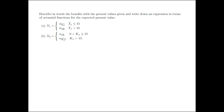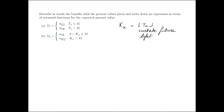Looking at part B, we deal with the random variable kx. kx is the curtate future lifetime — the floor function applied to tx — so it is the curtate future lifetime of an x-year-old. Looking at the notation used, we recognize the small a with no bar and no double dot. That means we are dealing with an annuity that pays at the end of the year — an immediate annuity.